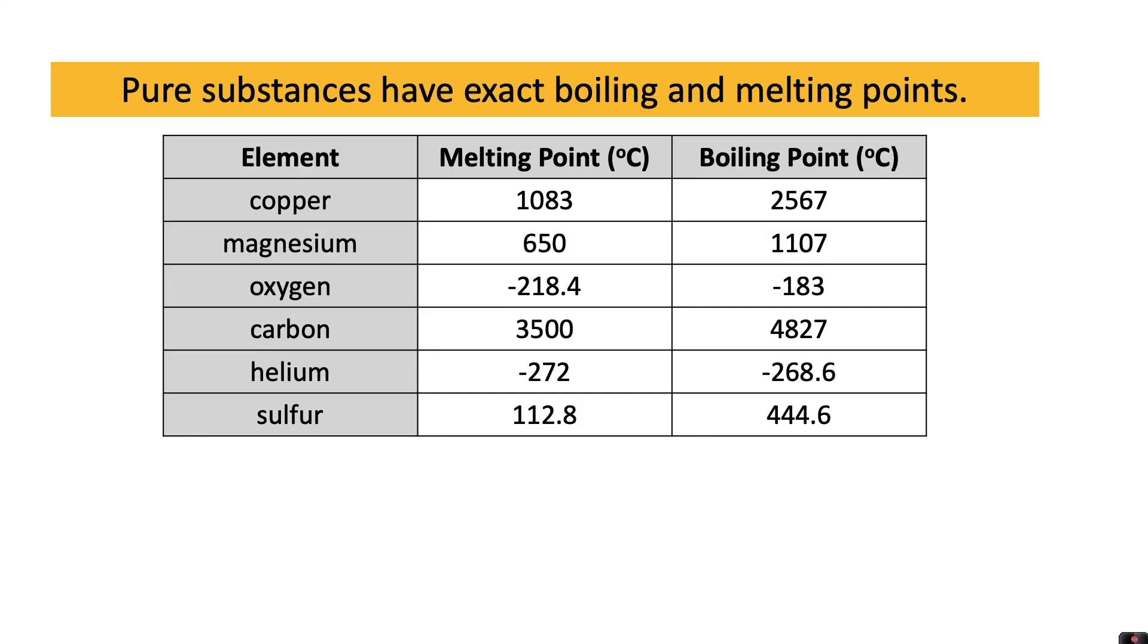Pure substances, so what I mean by pure is those made out of only one element, have exact boiling and melting points. You'll notice when you look at these tables online that they won't have tables for condensing and freezing points, because as I said before, the melting point is exactly the same as the freezing point for a substance, and the boiling point is exactly the same as the condensing point. So you'll often only see tables with melting and boiling points in.